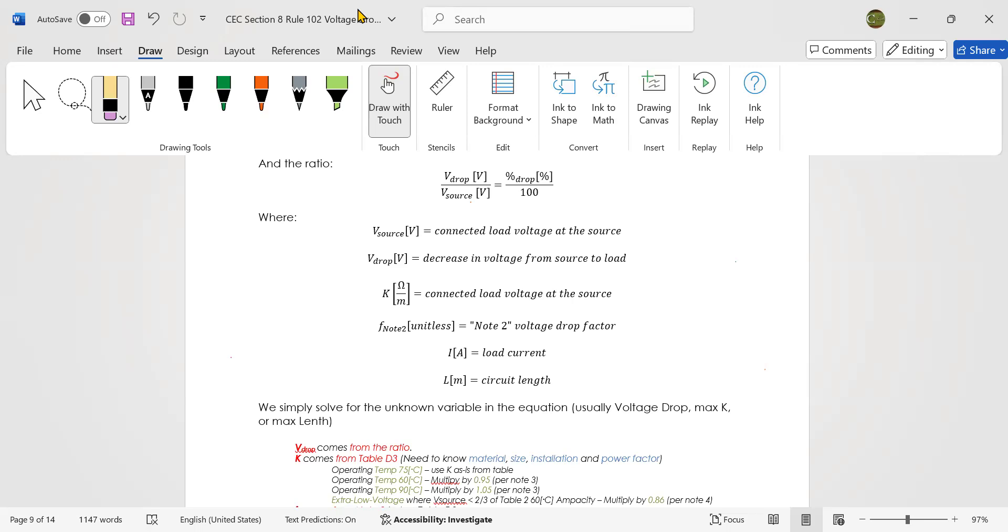Let me just summarize down here. We simply solve for the unknown variable in the equation. Usually we're solving for voltage drop, we're solving for the maximum K value, or we're solving for length. If you want some example problems, I can do a million example problems of this. Just let me know below, and I'll do that for you.